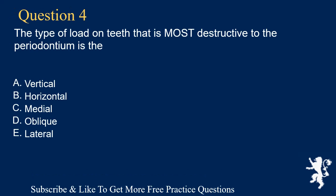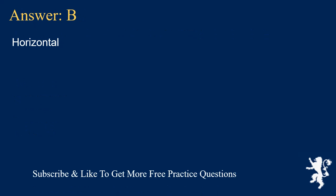Question 4. The type of load on teeth that is most destructive to the periodontium is: a. Vertical, b. Horizontal, c. Medial, d. Oblique, e. Lateral. Answer: B. Horizontal.